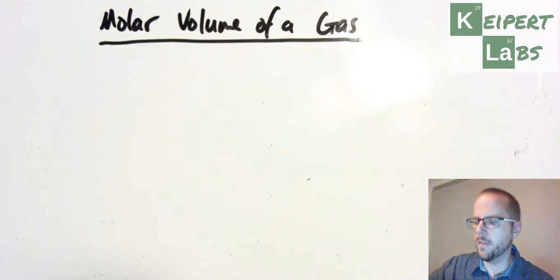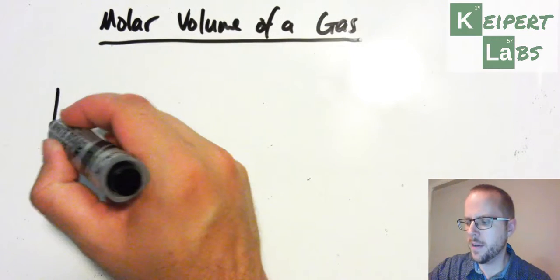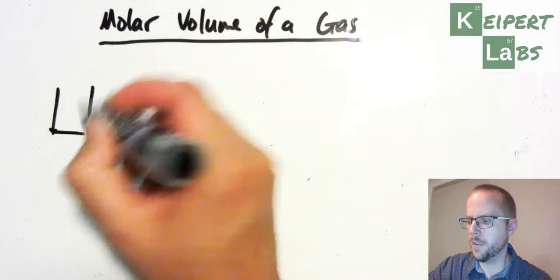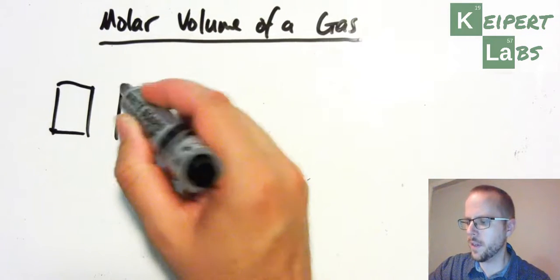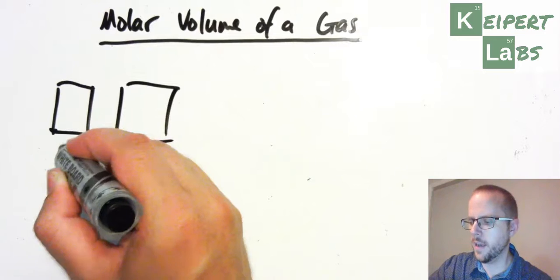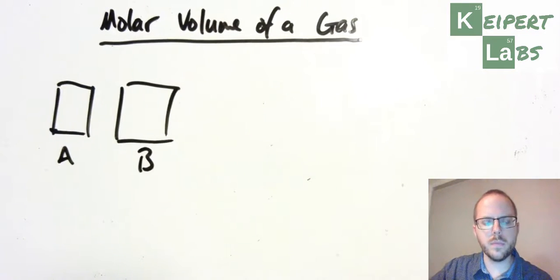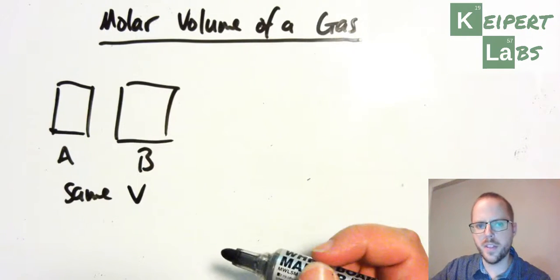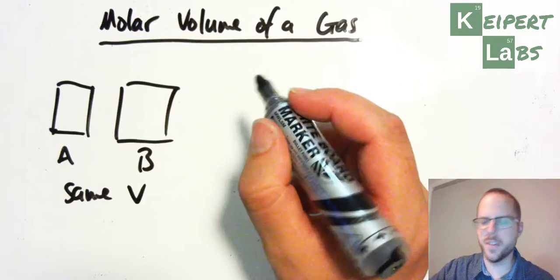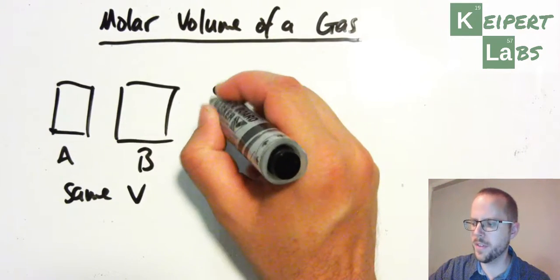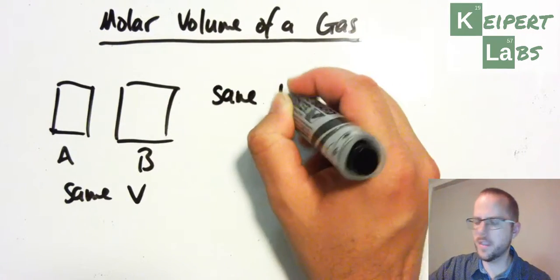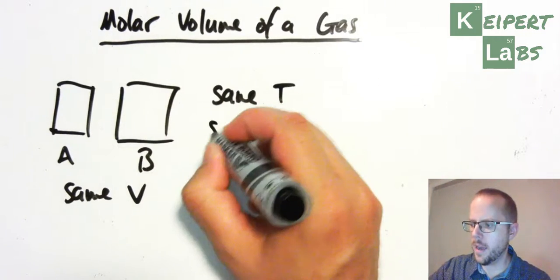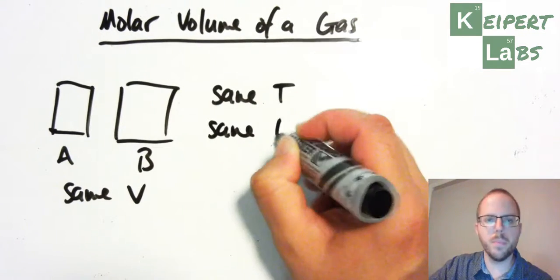Alright, so way back in year 11, we stated what we call Avogadro's hypothesis. So let's say we had containers of gas A and gas B that have the same volume. So what Avogadro's hypothesis said was that as long as we've got the same temperature, and the gases are at the same pressure,